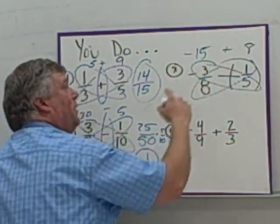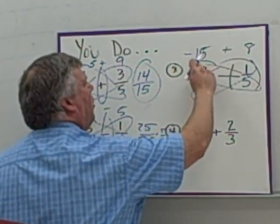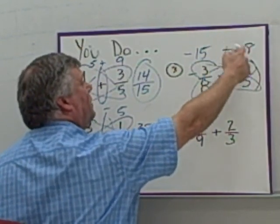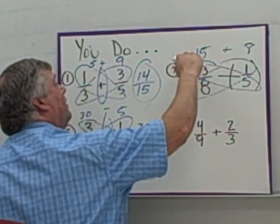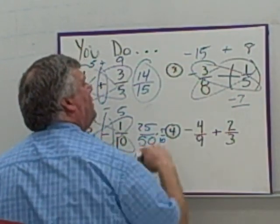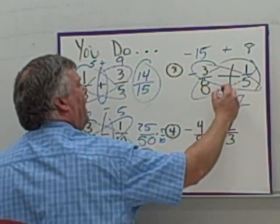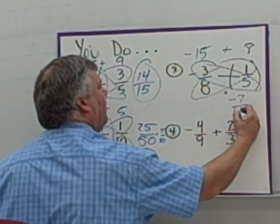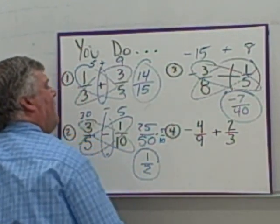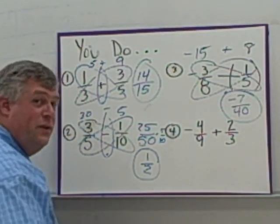-15 + 8 is going to become larger minus smaller. That's the rule of subtraction. So it's 15 - 8, which is 7. Sign of the larger on the answer, you get -7 for your numerator. On the bottom you've got 8 × 5, which is 40. You end up with -7/40. That cannot be reduced any further.